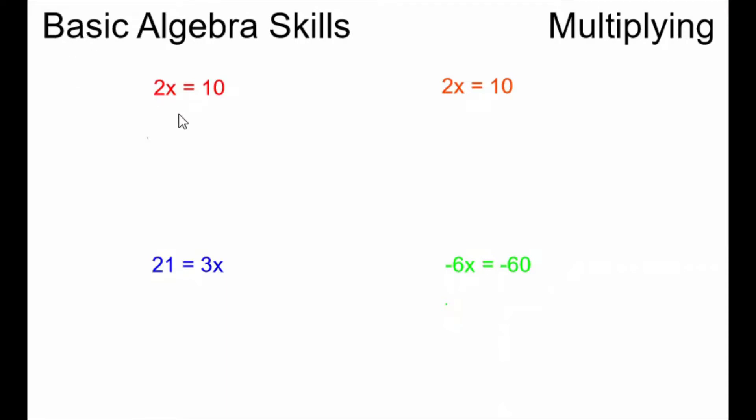Here on the top left we have 2x equals 10. The goal of algebra is that I want my x, my unknown, to be alone on one side of the equals. It's not alone, it has a 2 with it and the 2 is being multiplied by the x. The way to get rid of that 2 is to do the opposite of multiplication which is division.